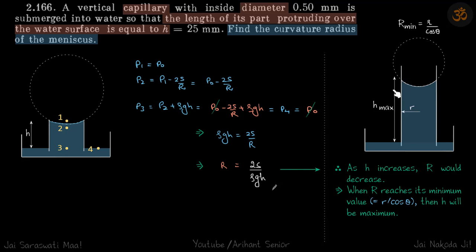We generally consider a sufficiently long capillary and find the equilibrium height. But here the height of the capillary is quite small, so the water will reach the top but it won't become a fountain. Instead, the curvature of the meniscus will start to increase. As the curvature increases, the pressure becomes less and less, and it will continue to increase until the pressure equals atmospheric pressure, at which point the meniscus will not change.